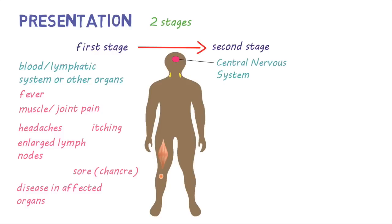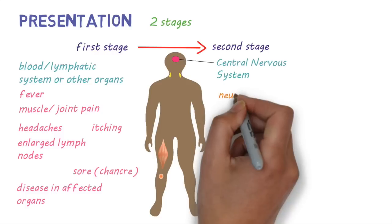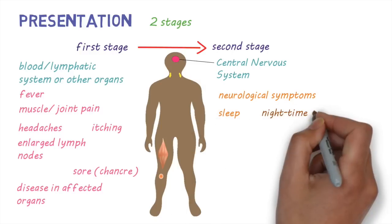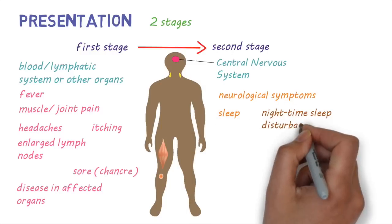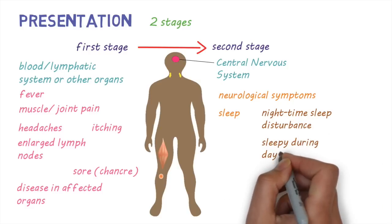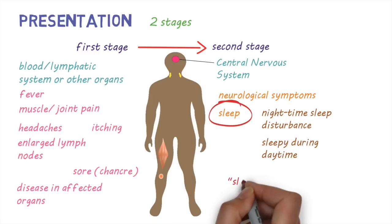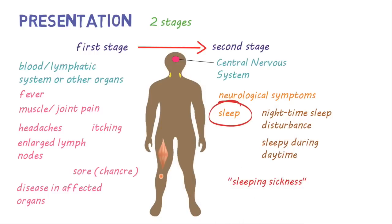In the second stage, there can be a range of neurological symptoms such as changes in personality, psychiatric symptoms, weakness, or problems with movement. The disease can affect sleep — patients tend to have nighttime sleep disturbances and are sleepy during the day. This can get progressively worse, with patients sleeping most of the time. This is why the disease is called sleeping sickness. If left untreated, the disease can lead to death.